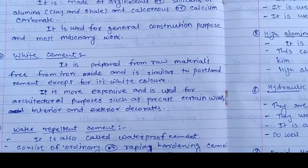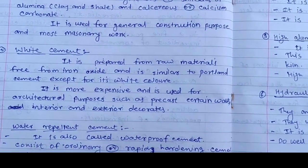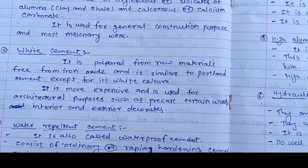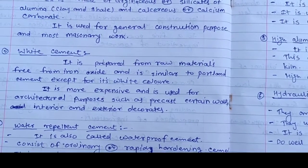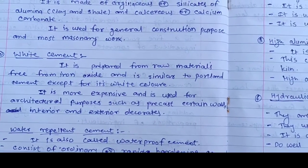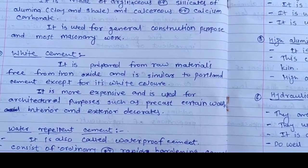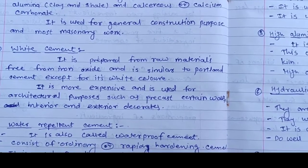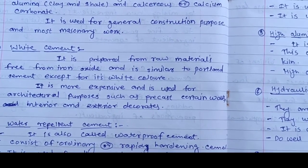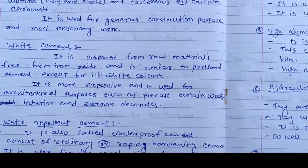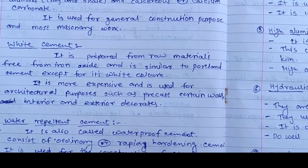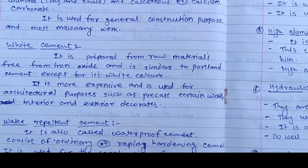The second type is white cement. It is prepared from raw materials free from iron oxide and is similar to Portland cement except for its white color. It is more expensive and used for architectural purposes such as precast curtain walls, and interior and exterior finishing.